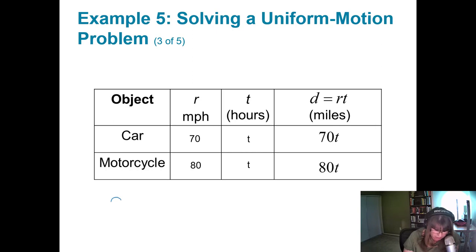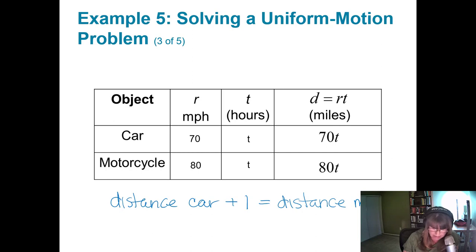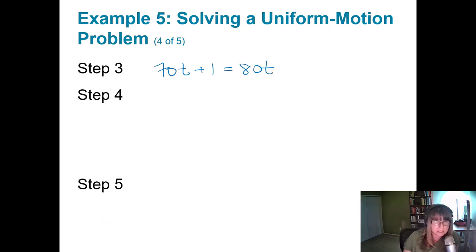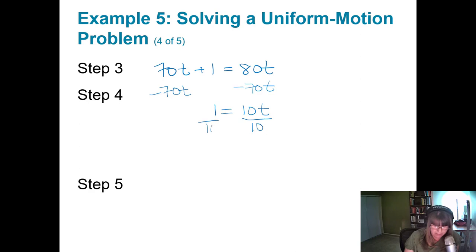So the distance of the car plus one more mile equals the distance of the motorcycle. We know the car's distance is 70T, so 70T plus 1 equals 80T. Solving: subtracting 70T from both sides gives 1 equals 10T. Dividing by 10, T equals 1/10 of an hour.